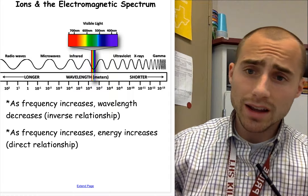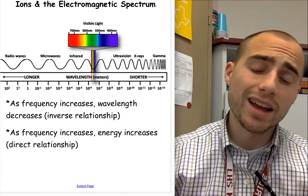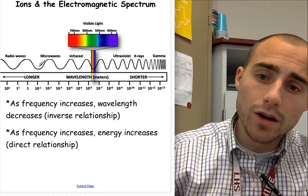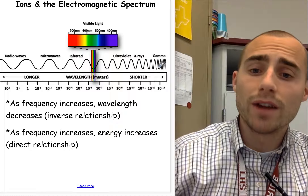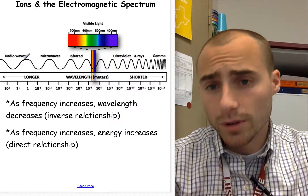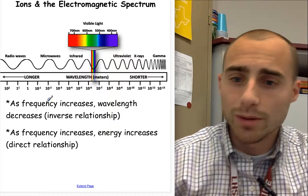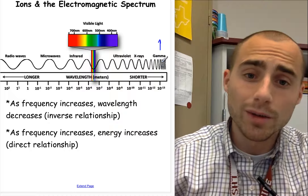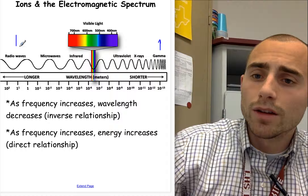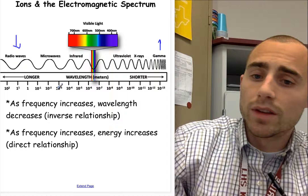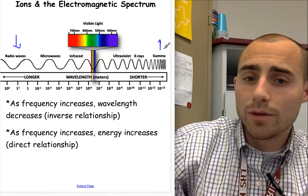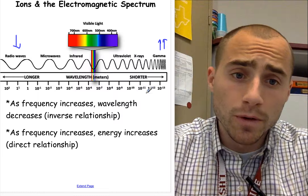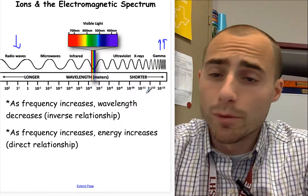One quick additional thing: ions and the electromagnetic spectrum. Anytime an ion gains or loses an electron, it gives off light. When it gives off light, it's either going to give off light with a long wavelength and a low frequency, or a short wavelength and a very high frequency. Frequency increases going one direction — as frequency increases, wavelength decreases. As frequency decreases, wavelength increases. So it's an inverse relationship. Energy is the same as frequency: as frequency increases, energy increases. Electrons give off light whenever they move from one energy level to another.